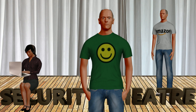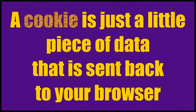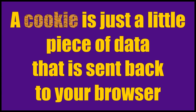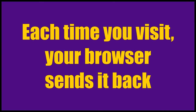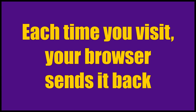When you visit a website, you get a webpage back, but you may also get a cookie — maybe even a whole tray of cookies. A cookie is just a little piece of data that is sent back to your browser. Assuming you have cookies enabled, that little bit of data is saved. Each time you visit that same website, your browser sends that cookie back along with your webpage request.